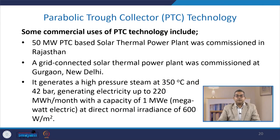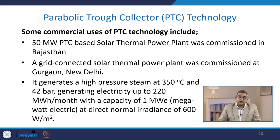There are some commercial uses of PTC technology. This includes a 50 megawatt PTC-based solar thermal power plant commissioned in Rajasthan, and a grid-connected solar thermal power plant commissioned at Gurgaon, New Delhi. It generates high-pressure steam at 350 degree Celsius and 42 bar, and can generate electricity up to 220 megawatt with a capacity of 1 megawatt electric at a direct normal irradiation of 600 watt per meter square.